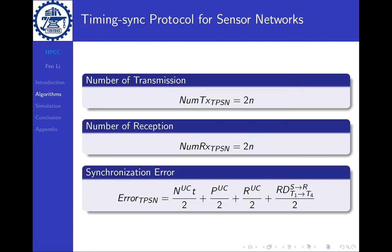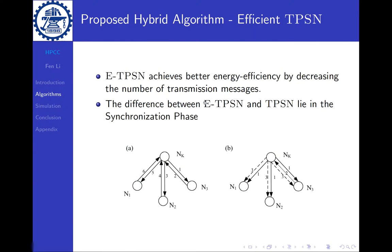So that makes us consider if we can take advantage of both algorithms. First let's look at the Efficient TPSN, which modifies the existing TPSN. It achieves better energy efficiency by decreasing the number of transmission messages. The difference lies in the synchronization phase.